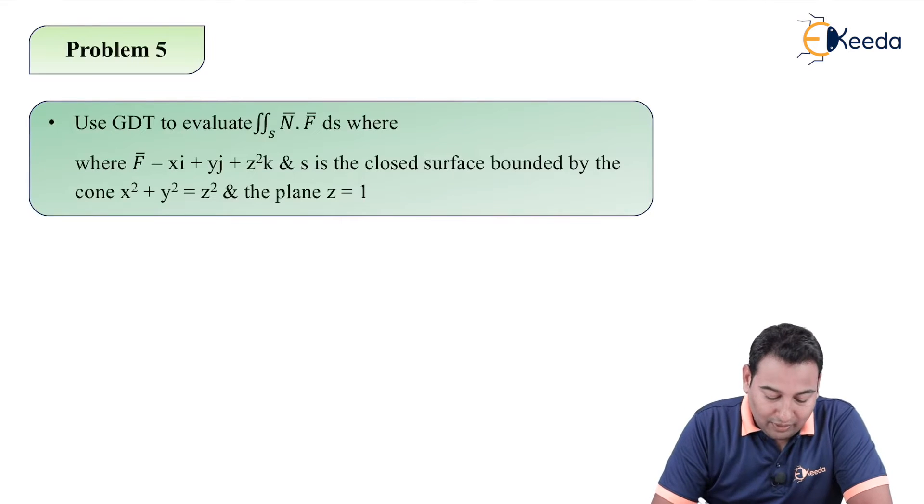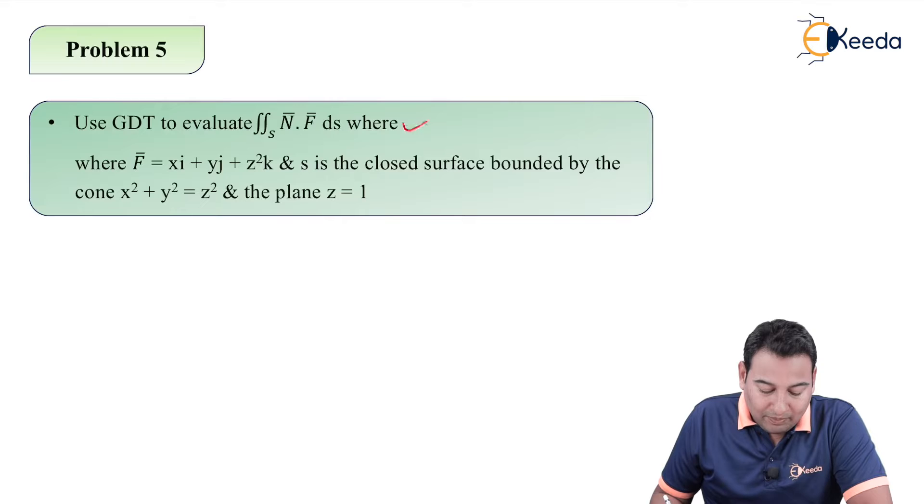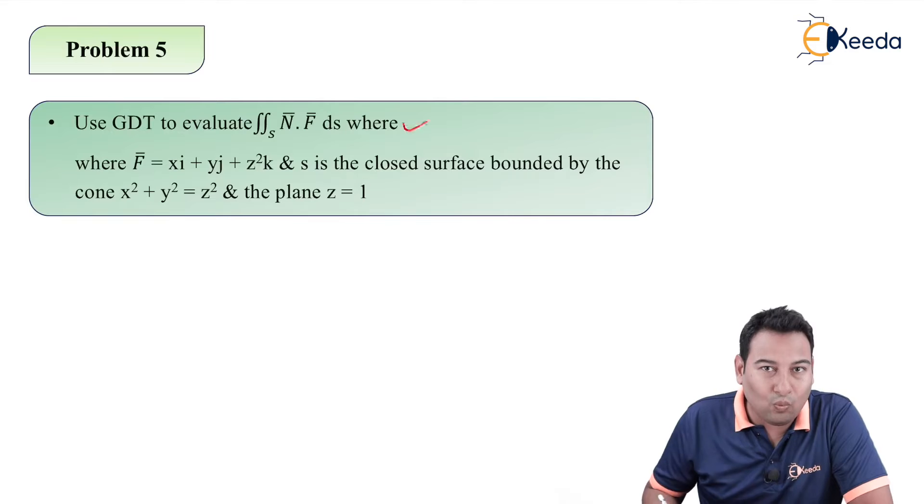Use GDT to evaluate double integration S, n bar dot F bar dS, where F bar is given to us. And S is the closed surface bounded by the cone x square plus y square equals z square, and the plane z equals 1.